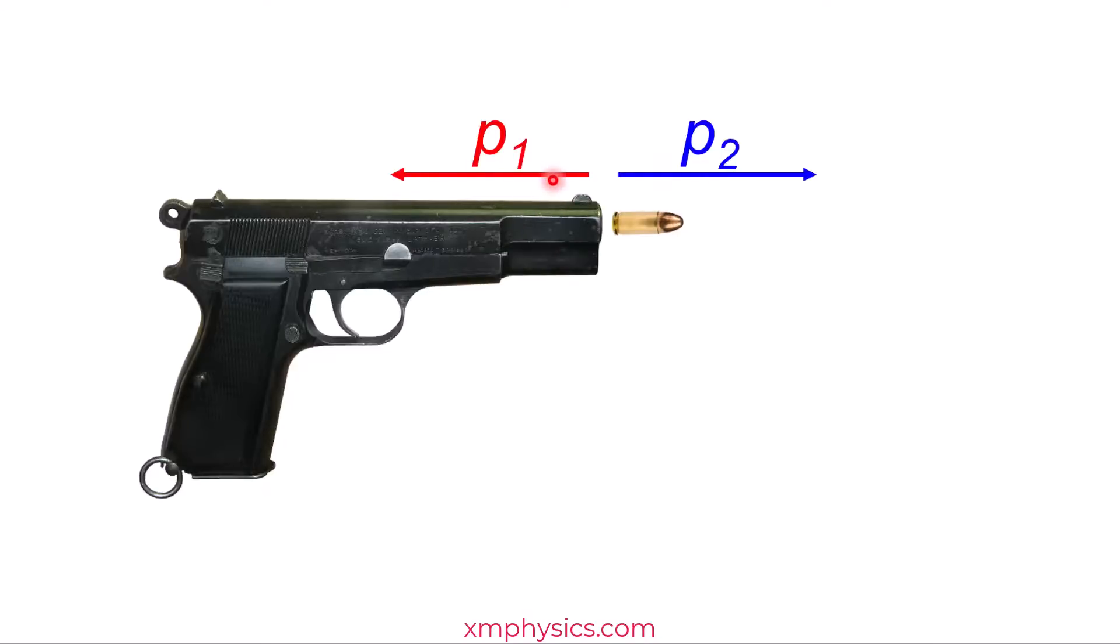And these two momentums are equal but opposite in direction. How do we know that? Because when you fire the bullet, all that's happening is the gun pushing the bullet rightward and the bullet pushing the gun leftward. So these are action-reaction pairs. There's no external force acting on my gun-bullet system.